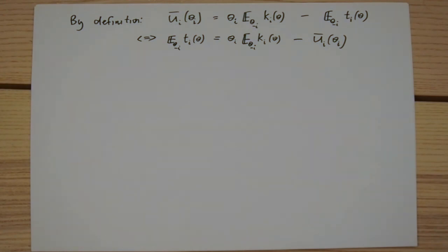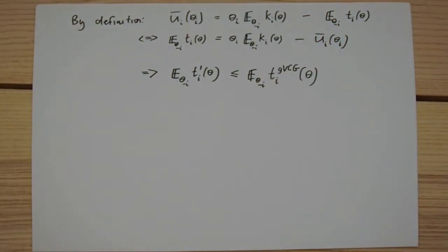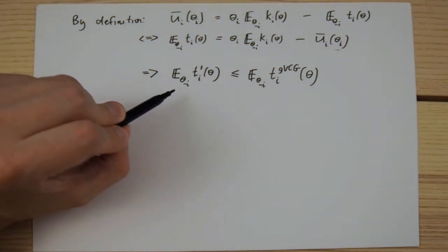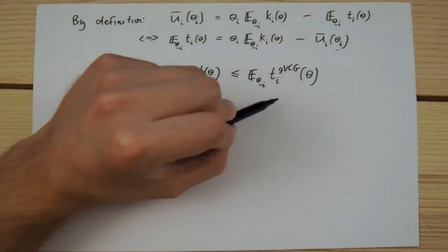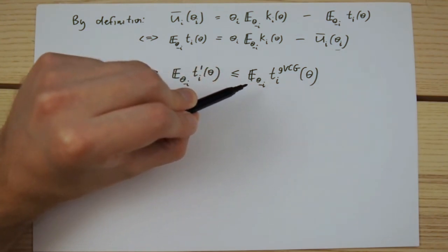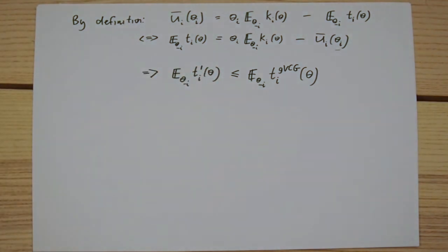it follows that the expected transfer of type theta_i of player i is weakly smaller in the candidate mechanism than it is in the GVCG. Taking the expectation over player i's type and taking the sum over all players then yields the result.